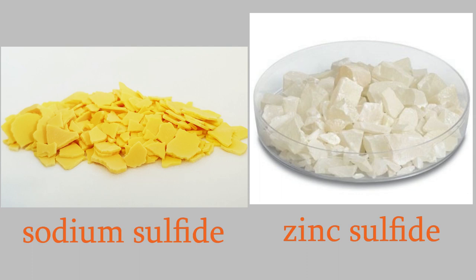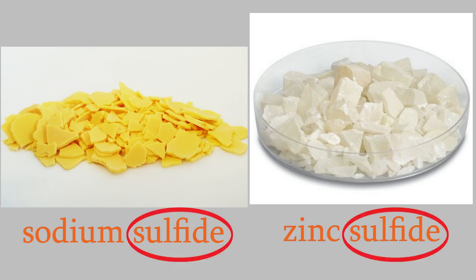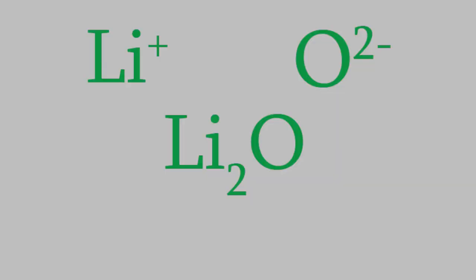It's actually pretty easy to name compounds. Most compounds have names made of two words. If there are no polyatomic ions, the first word is just the name of the atom the positive ion came from. And the second word is the name of the negative ion, but with the end of the element chopped off and replaced with the suffix "-ide."